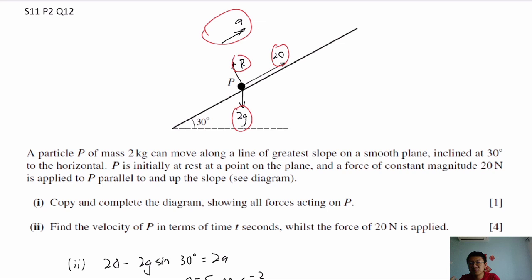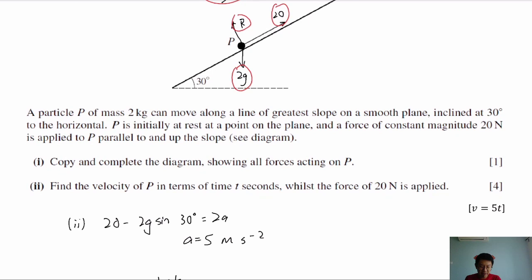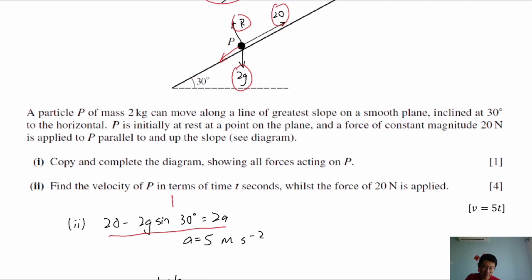So we just assume the particle will move up, where the acceleration A is going upward. Using F = MA, our net force following the direction of acceleration is 20 going up minus 2G resolved down the slope, which is 2G sin 30. The left-hand side gives us 10. A positive resultant force means the resultant force is in the direction of the A we set, so the particle actually moves up. Using the net force equals MA, we find A = 5 metres per second squared.